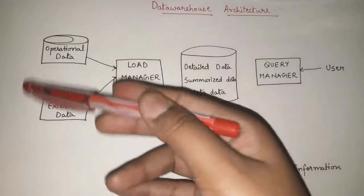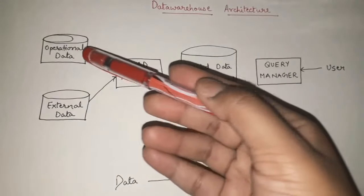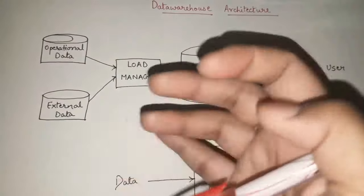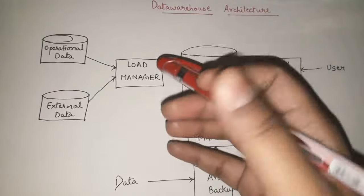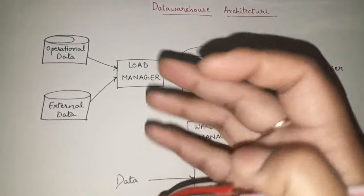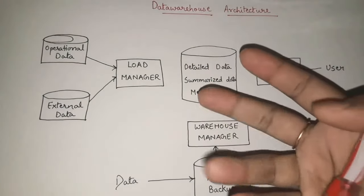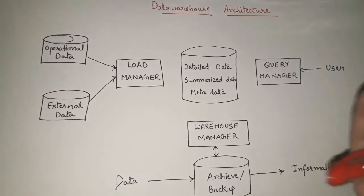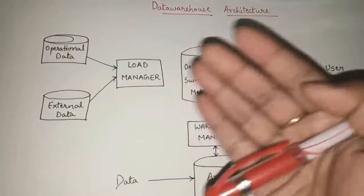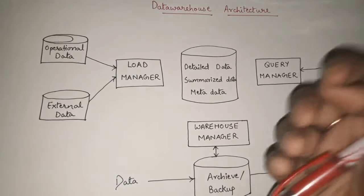Since we are getting bulk data from various different sources, the data can be of different types — operational data, external data, links — all in different formats. What the Load Manager does is take all that data of different types and, whenever needed, convert it all into one consistent format so the data can be easily processed further. So transformation means bringing all the data into one specific consistent format.